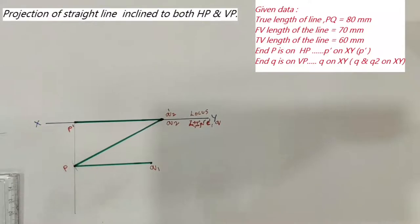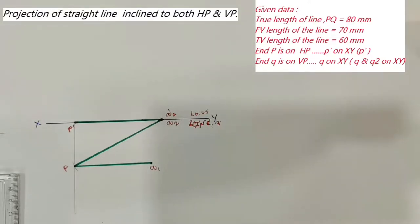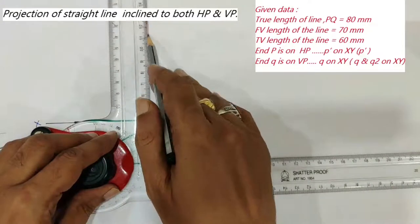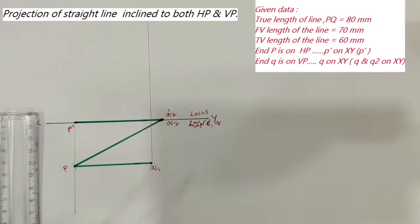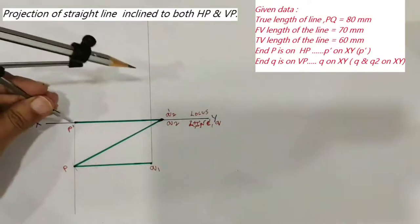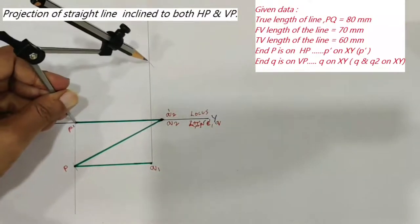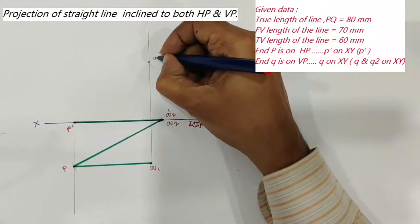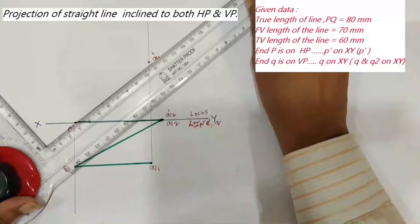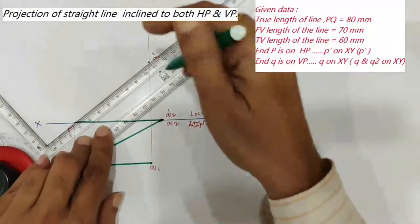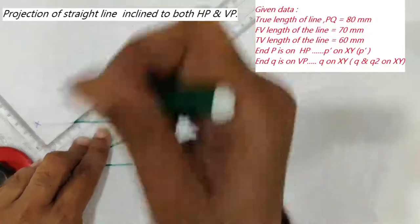For this top view, we will draw the true length in the front view. At Q1, draw a projector vertically upward. Then, with the true length of 80mm as a radius and P' as a center, draw an arc on the projector. Name this point Q1'. Then join P' and Q1' — this is the true length of the line in the front view.